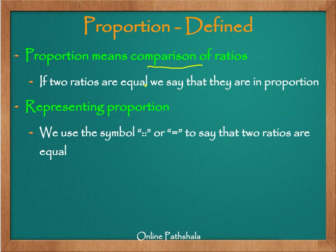If two ratios are equal, we say that they are in proportion. It is as simple as that. We just take two ratios, find their simplest or lowest forms, and if those two are the same, we say that they form a proportion.